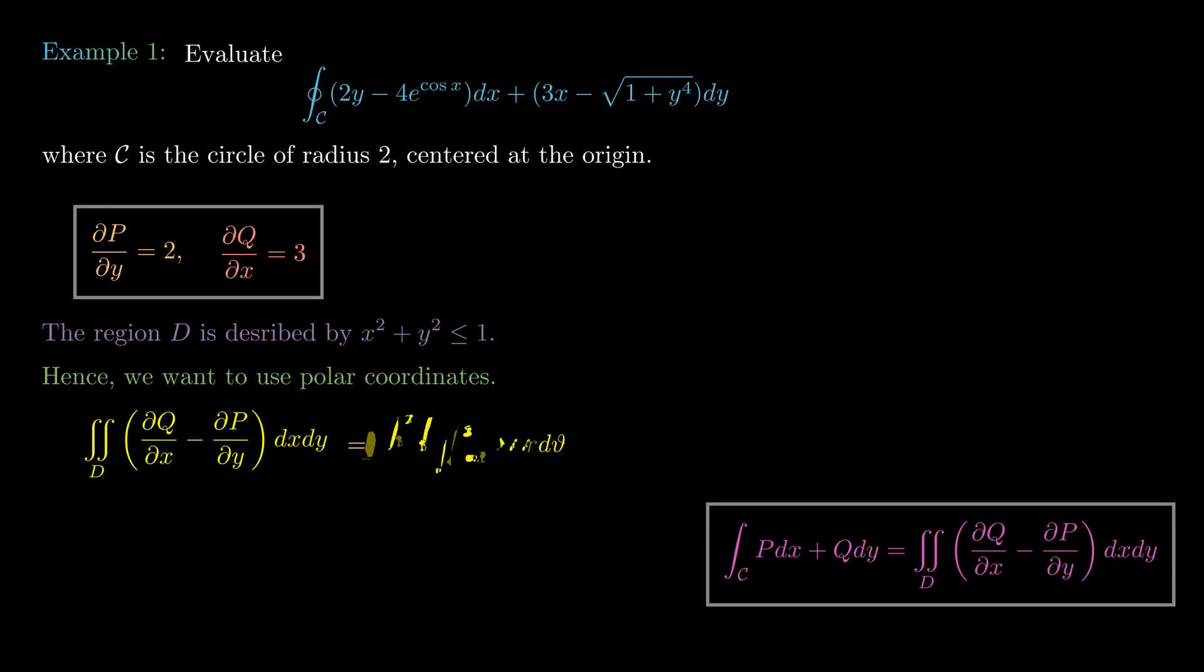Of course this is just the integral from 0 to 2 pi of the integral of 0 to 2 of r dr d theta. There's no theta dependence, so we just have 2 pi times the integral from 0 to 2 of r dr, and then of course r integrates to 1 half r squared, and the final answer is just 4 pi.